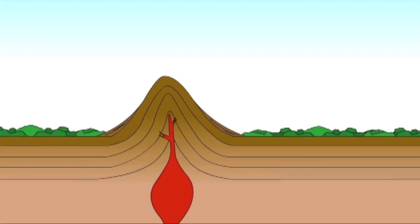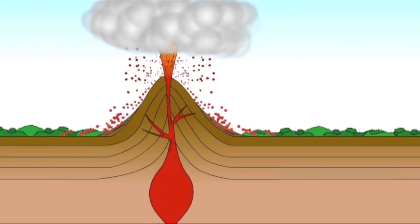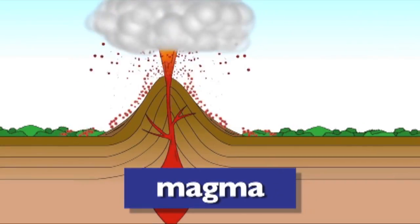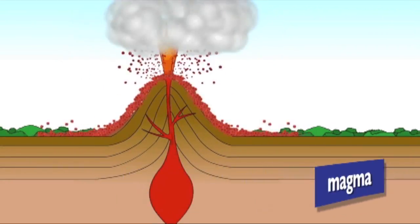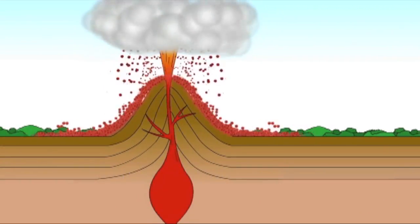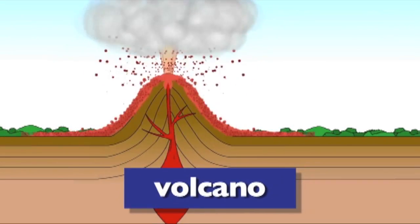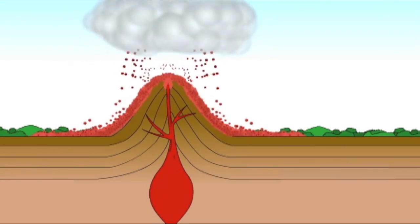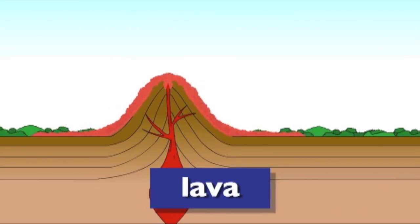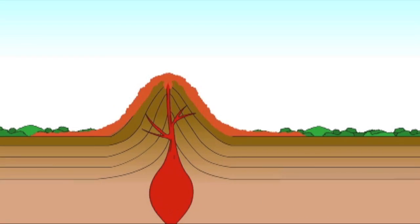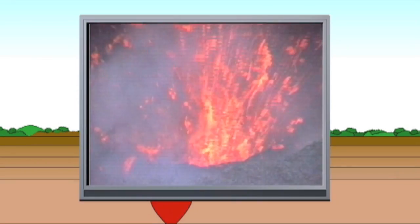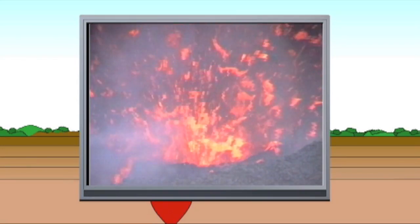Now sometimes, melted rock from deep inside the earth, called magma, forces its way through the crust. We call this a volcano. When the magma oozes out of the earth, we call it lava. As the lava cools, it turns to solid rock, and that's the beginning of a mountain. There are active volcanoes all over the world.